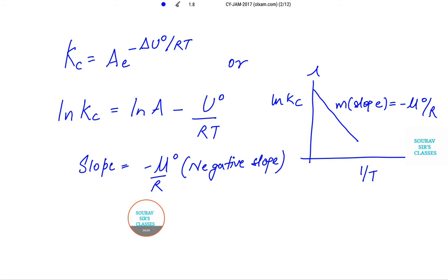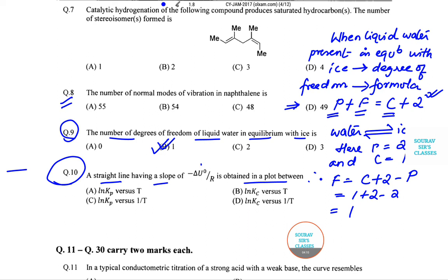So given the diagram we have drawn, we can say clearly that for a negatively sloped line, we must have log Kc on the vertical axis and 1 by T on the horizontal axis. That means D will be the correct answer to this particular question.